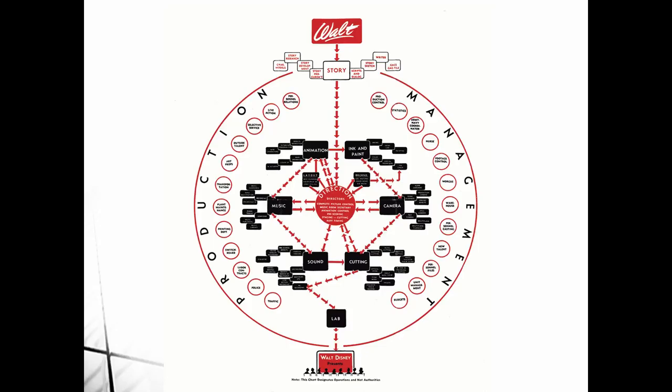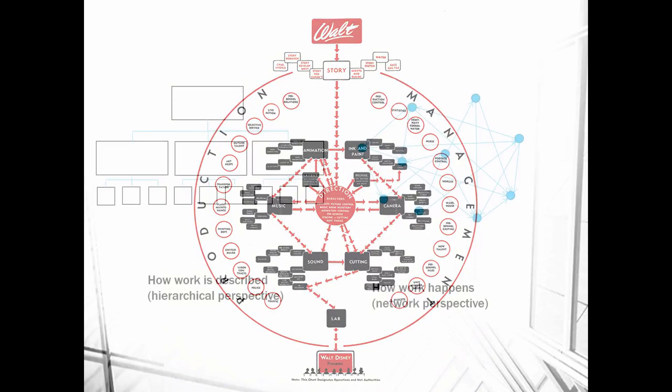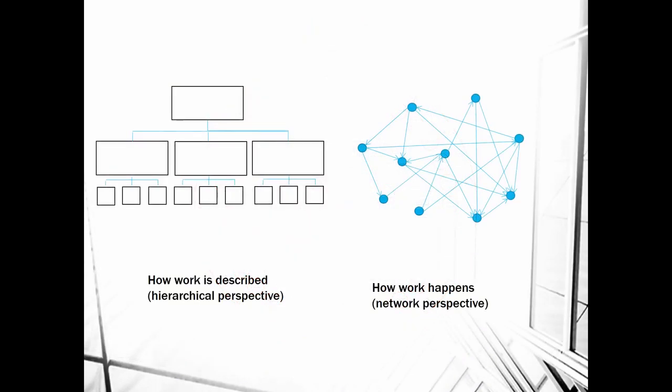Even back as far as 1943, certain organizations were still thinking along these lines. Here again are the two versions of the theme we've carried through since week one: we describe a lot of work and organizations in this hierarchical perspective on the left, the traditional org chart way of doing things. But we know that how work actually happens isn't reflected in that org chart.